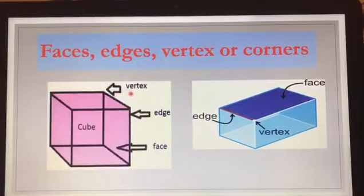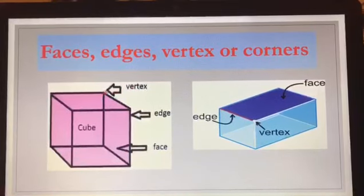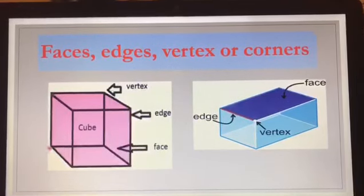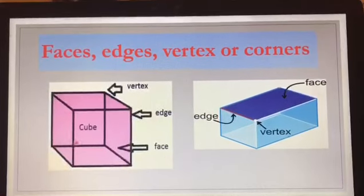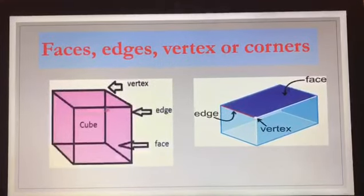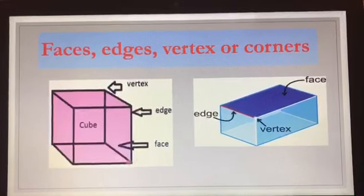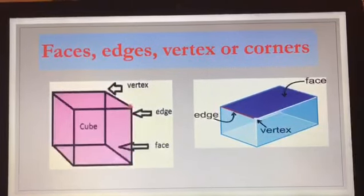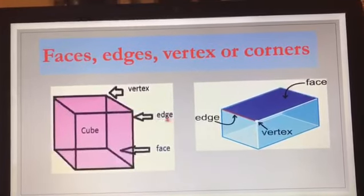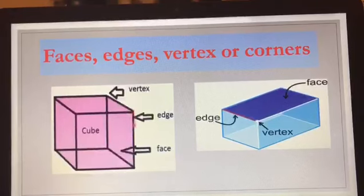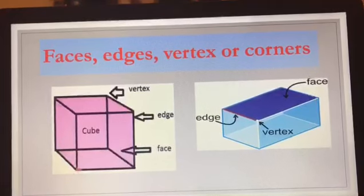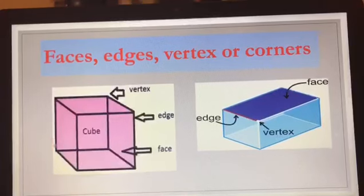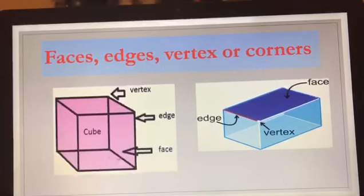This shape is a cube. These corners are all called the vertex — corners or vertex mean the same thing. This part here is called the edge. These lines are all called the edges.